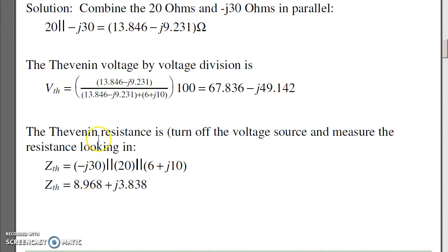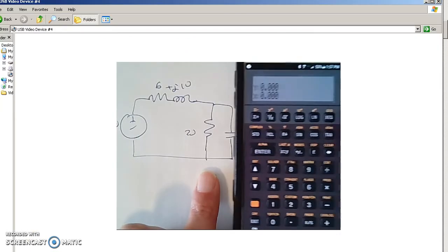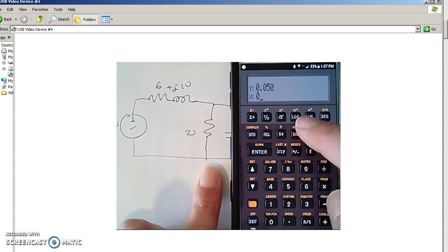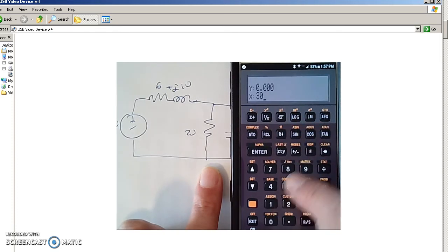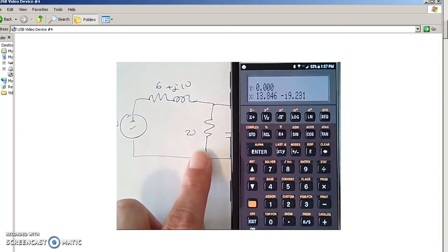The Thevenin voltage. I can use voltage division. Take these two in parallel, and it's going to be Z1 over Z1 plus Z2. Again, with our trusty HP, I'll put these two in parallel, 20 ohms in parallel with minus j30. Inverse, plus, inverse. Gives you 13 minus j9 ohms. That's your Z1 over Z1 plus Z2.